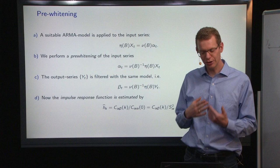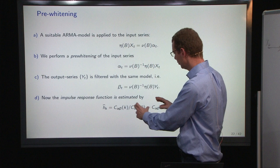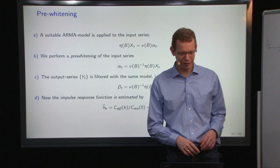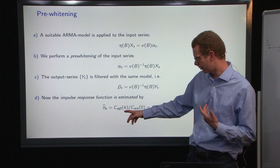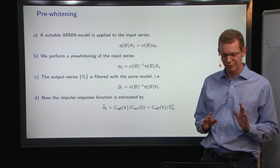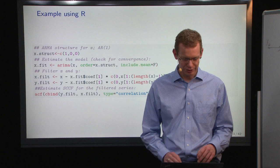Then we use that to pre-whiten the input. That means, basically, what we have here are the residuals from your ARMA-style model. So alpha_t is a white noise signal. Now, what we do is that we take the same model, and we use that to filter the output series, and then we get some beta_t's. Then we estimate the impulse response by looking at the cross-covariance and cross-correlation between alpha and beta. So that's the game, the name of the game.